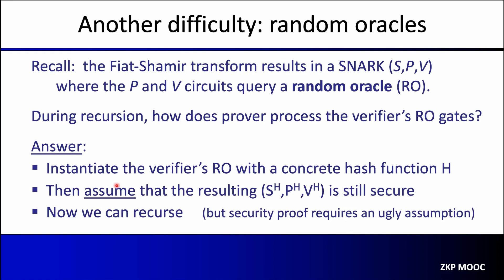The standard answer is: before starting the recursive process, we instantiate all the random oracles in the verifier's circuit with a concrete hash function — say SHA-256, or something more amenable to arithmetic circuits like Poseidon. Of course, once we move away from the random oracle model, we no longer have a security proof that the SNARK system is sound, so we have to assume that after this substitution the proof system is still sound. We can justify that assumption by the fact that it holds in the random oracle model.